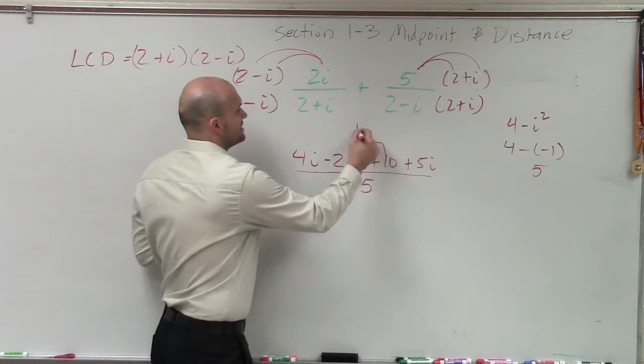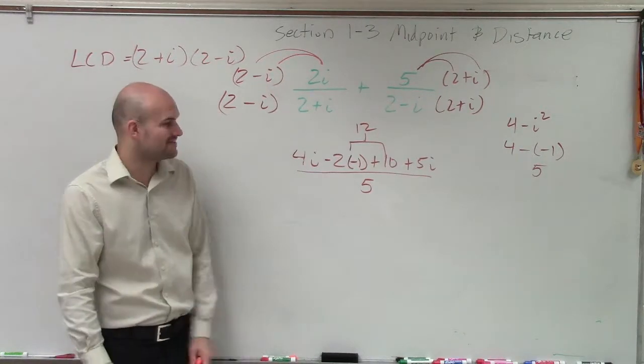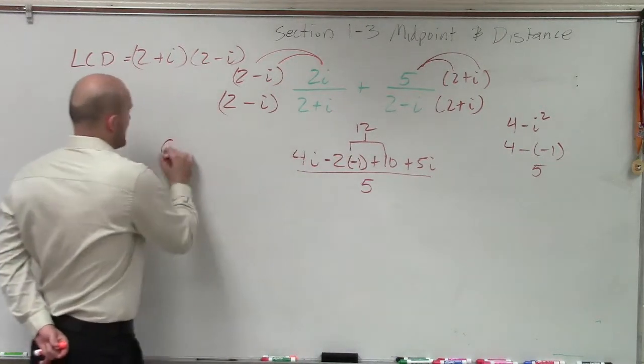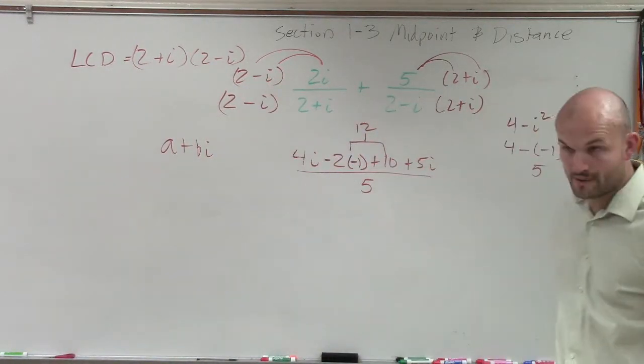So those two combine to give me 12. Then, I have 4i plus 5i is 9i. So write it in a plus bi format, right? Because, remember, all complex numbers need to be written in our a plus bi format.